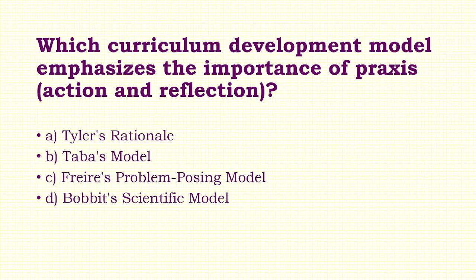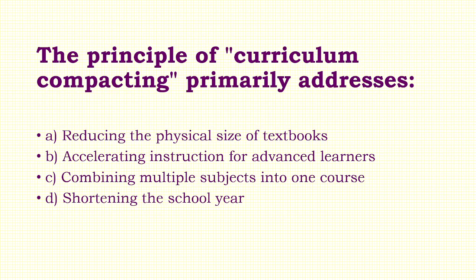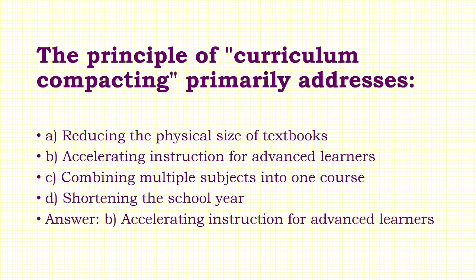Question 42: Which curriculum development model emphasizes the importance of practice, action and reflection? Options: A) Tyler's Rational, B) Taba Model, C) Freire's Problem-Posing Model, D) Bobbit's Scientific Model. Answer: Option C — Freire's Problem-Posing Model. Question 43: The principle of curriculum compacting primarily addresses: A) Reducing the physical size of textbooks, B) Accelerating instruction for advanced learners, C) Combining multiple subjects into one course, D) Shortening the school year. Answer: Option B — Accelerating instruction for advanced learners.